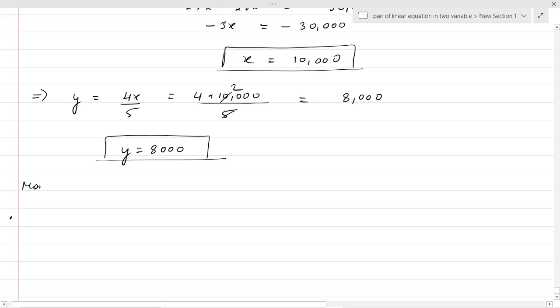So we got that monthly income of A, which we supposed as X, is 10,000. And monthly income of B, which we took as Y, is 8,000. Okay, so this is our answer.